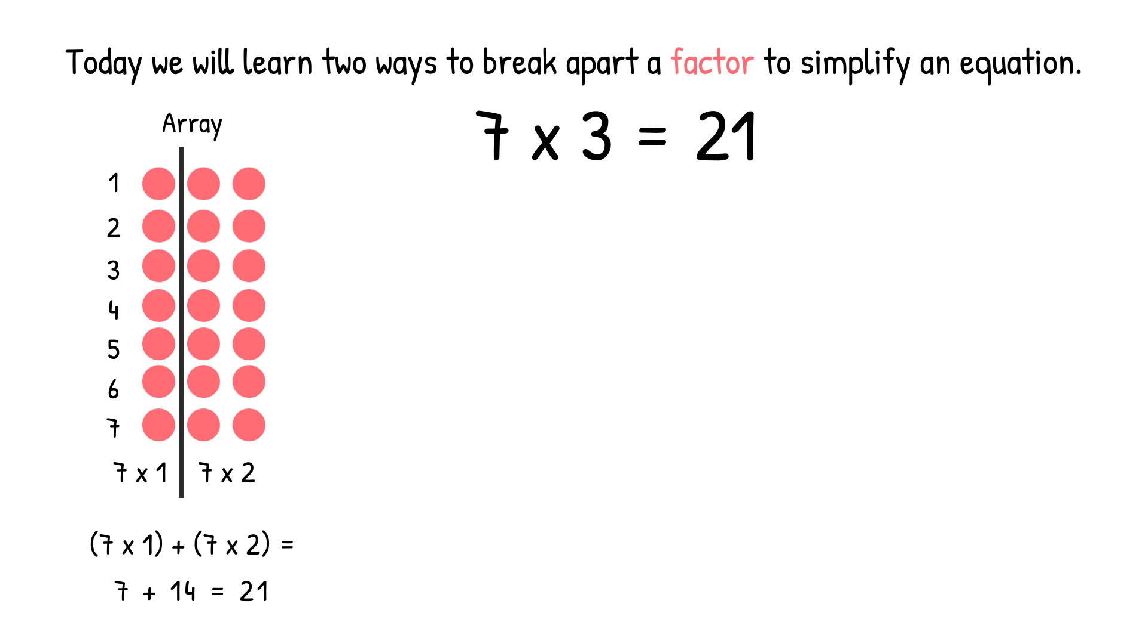The second strategy we're going to use is the number bond strategy. So we're going to rewrite the expression 7 times 3, and then we're going to put our two little lines to create our number bond under the number 3. We broke apart the 3 into 1 and 2. A very important thing that we have to remember when doing the number bond strategy is that the two addends that you break apart the number by need to equal the number that you're breaking apart. So 3 equals 1 plus 2.